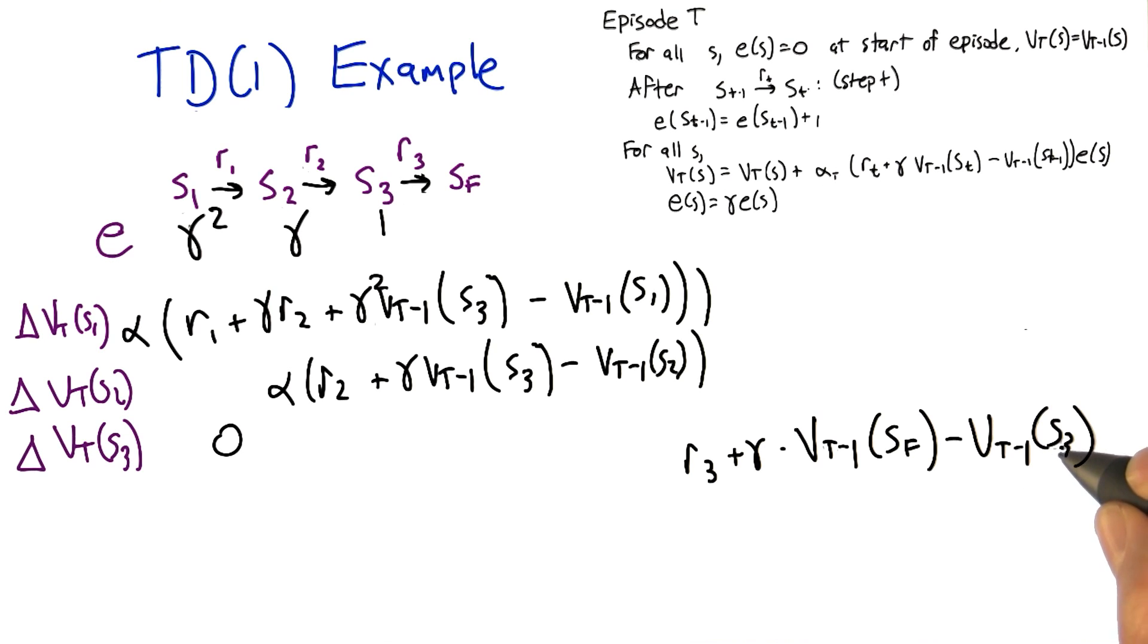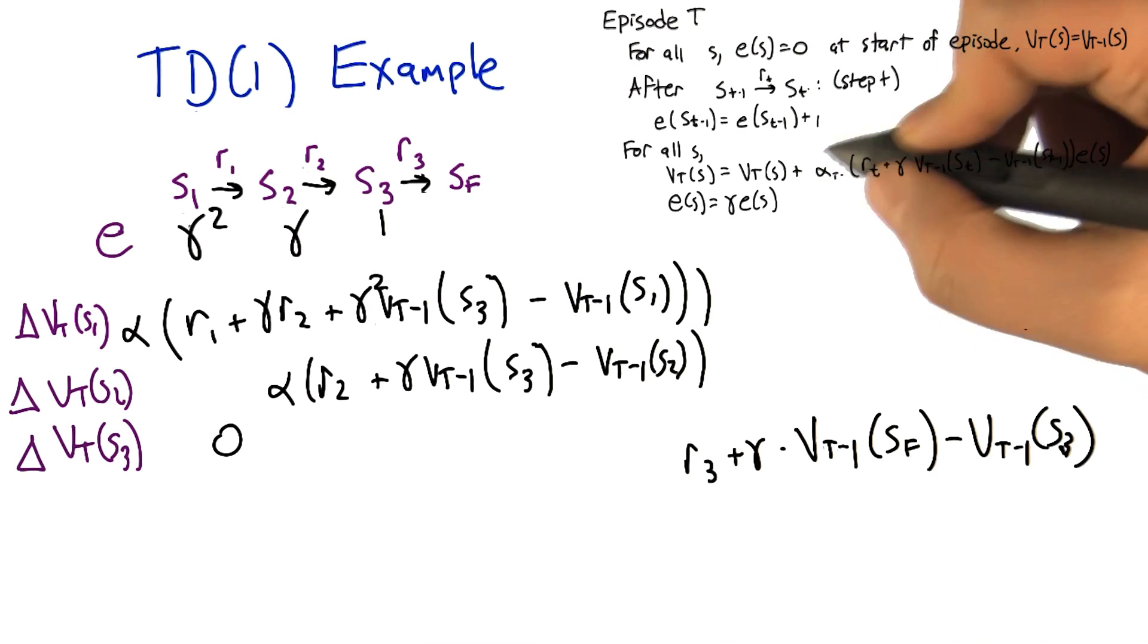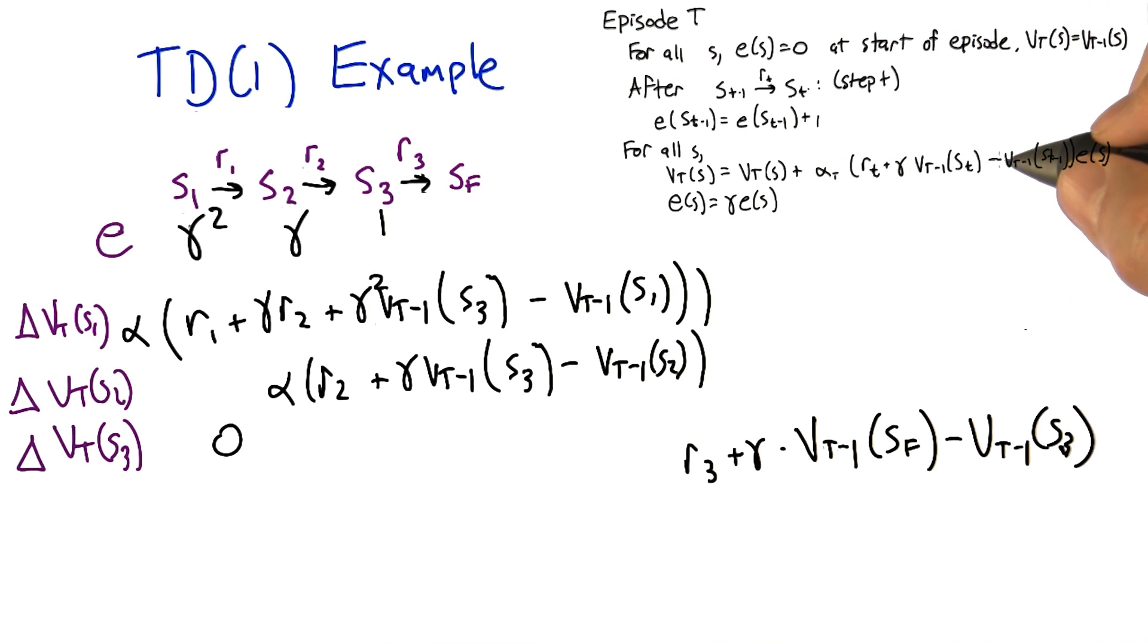So if you look at the pseudo code, right, you say for all s, you update the value of the state. If you look at the stuff that's multiplied by alpha sub t, all that basically is your error. It's a temporal difference error, that's why this is TD learning.